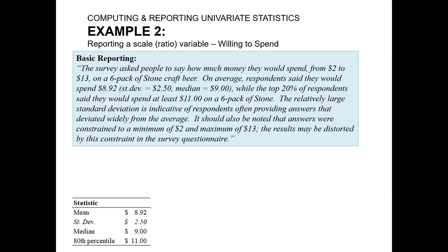Now that I've completely set up my table in Excel and I'm looking forward to reporting it in the actual report, I might write something like: the survey asked people to say how much money they would spend from $2 to $13 on a six pack of stone craft beer. On average, respondents said they would spend $8.92, standard deviation of $2.50, median of $9, while the top 20% of respondents said they would spend at least $11 on a six pack of stone. The relatively large standard deviation is indicative of respondents often providing answers that deviated widely from the average. It should also be noted that answers were constrained to a minimum of $2 and a maximum of $13. The results may be distorted by this constraint in the survey questionnaire.